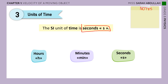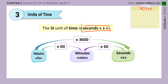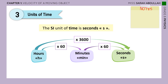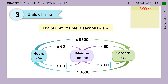An hour is 60 minutes, so to convert from hours to minutes, multiply by 60. From minutes to seconds, also multiply by 60. From hours to seconds, multiply by 3,600 (which is 60 times 60). Going the other way: from seconds to minutes, divide by 60; from minutes to hours, divide by 60; and from seconds to hours, divide by 3,600.